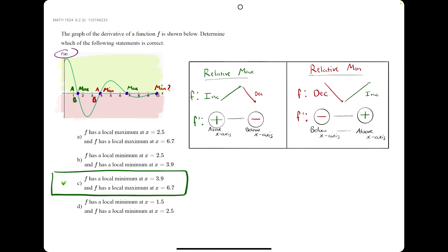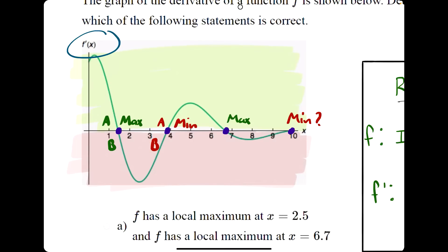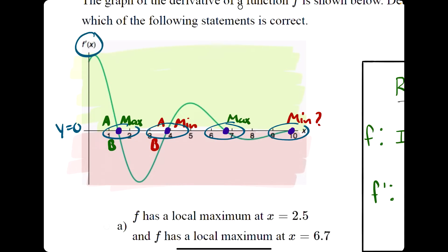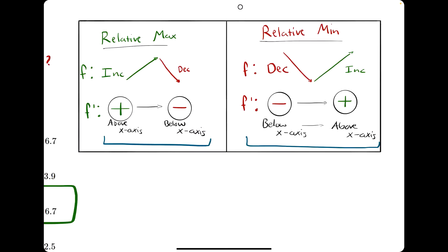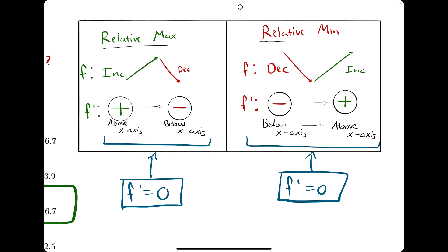From this, we learn that f will have a max or min wherever f prime equals zero, because x-intercepts are where y equals zero, and here our y is f prime. So for f to have either a max or a min, f prime must equal zero. This makes sense: for f prime to change from positive to negative or negative to positive, it must pass through zero in between.